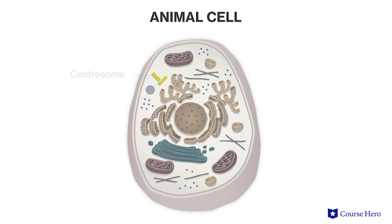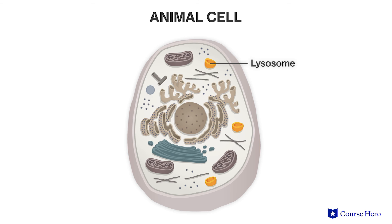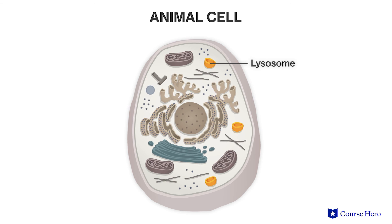The final organelle that we're going to look at today is the lysosome, a small enzyme-filled sac. Lysosomes fuse with vacuoles that contain material derived from within the cell, such as damaged organelles. Once the membranes fuse, the contents of the vacuoles are exposed to the enzymes in the lysosome and they are degraded. The components can then be reused by the cell. The lysosome is sometimes referred to as the garbage disposal of the cell.